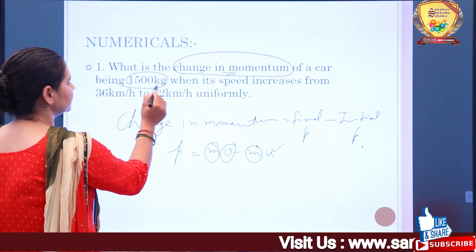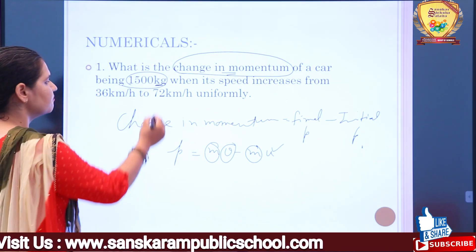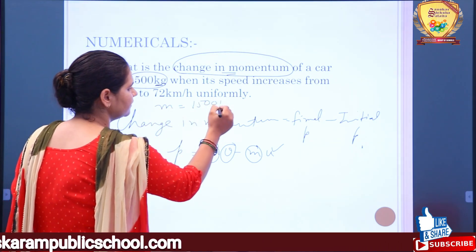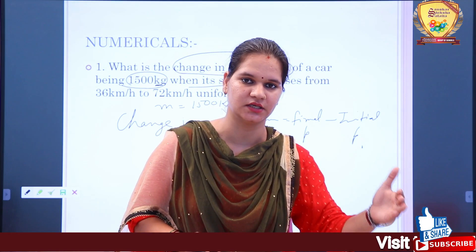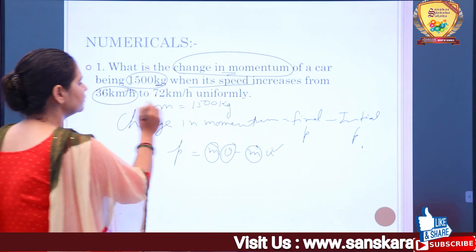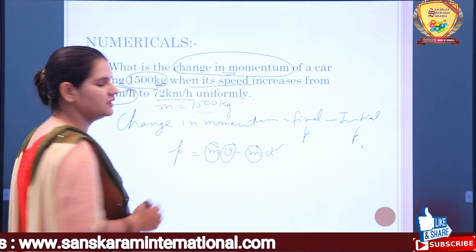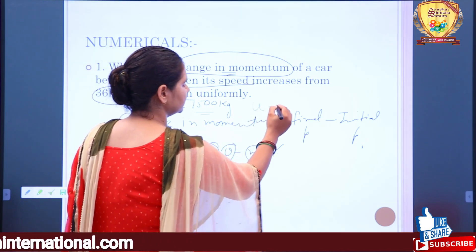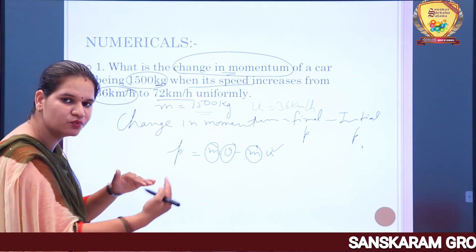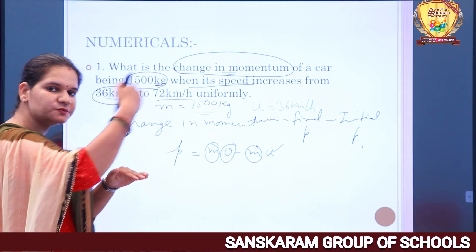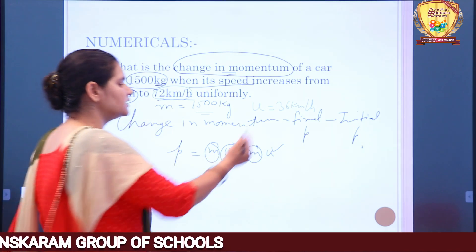The momentum of a car of mass 1500 kilograms — kilogram is the SI unit of mass, so mass is 1500 kg. The speed increases from 36 kilometers per hour to 72 kilometers per hour. But these speeds need to be converted into SI units before calculation.